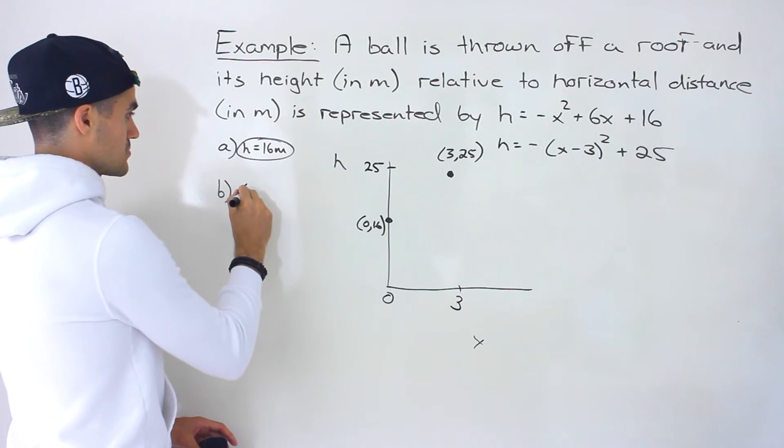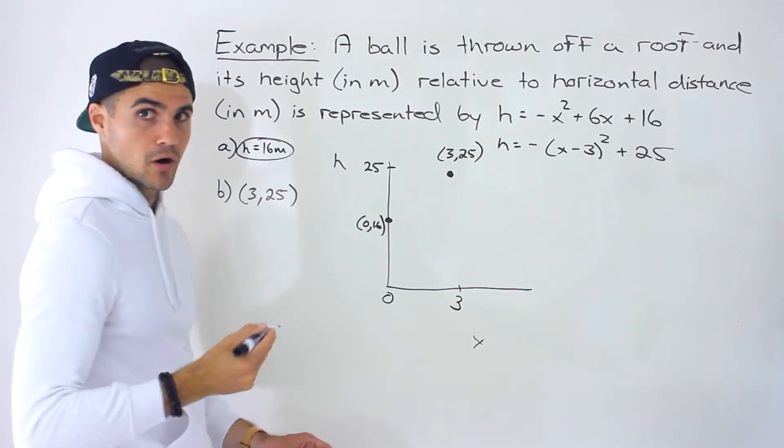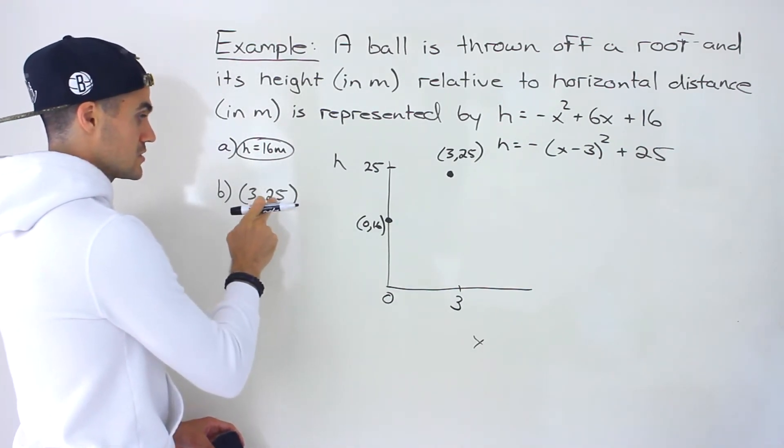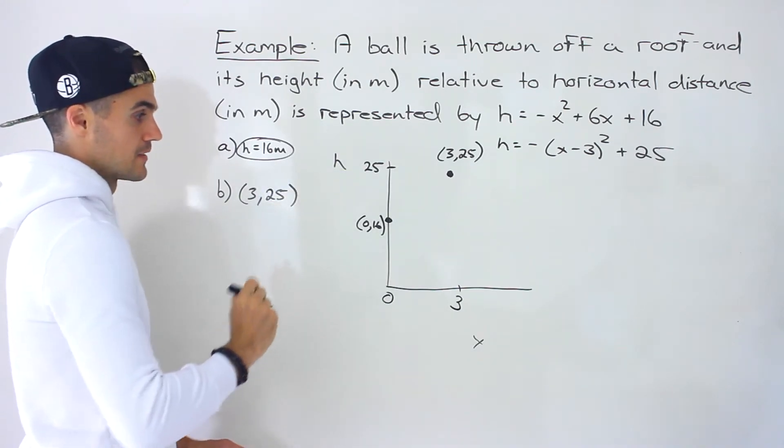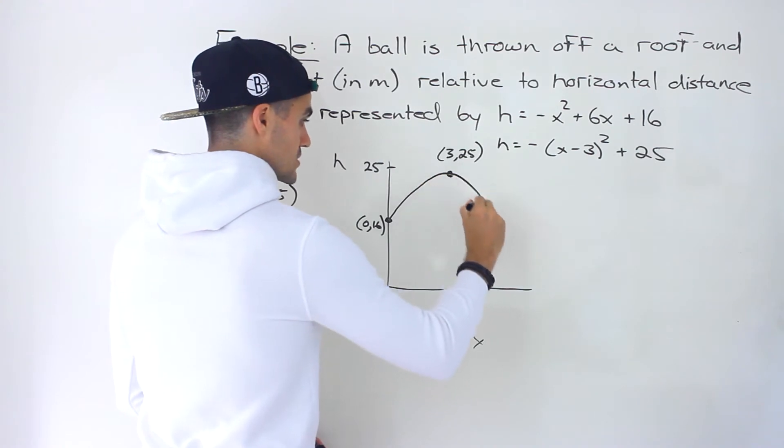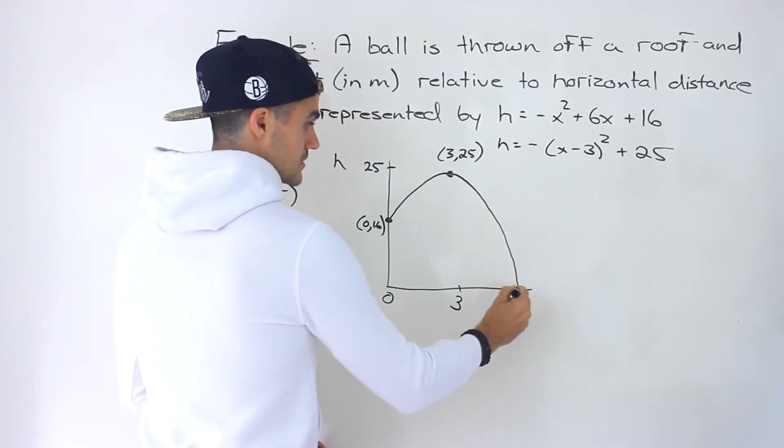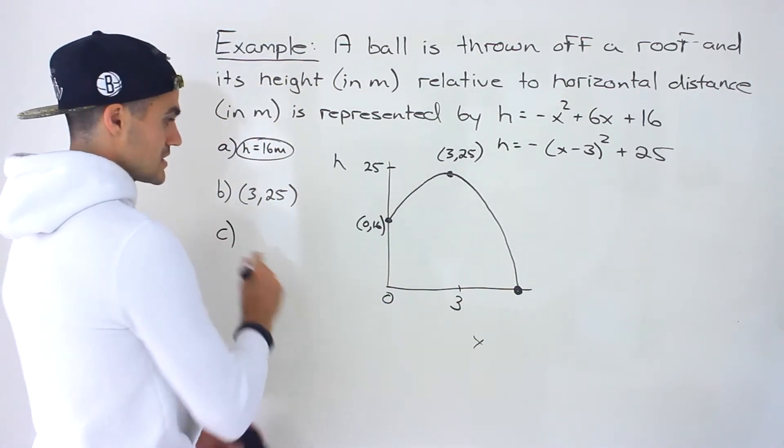So for part B, I'll just put the coordinate. But if you want to write out a sentence for part B for the answer, then you can. Horizontal distance is 3 meters, height is 25 meters when the ball reaches its max height. So then what's happening is if we draw this quadratic further, it reaches that max height, and then it hits the ground right here.